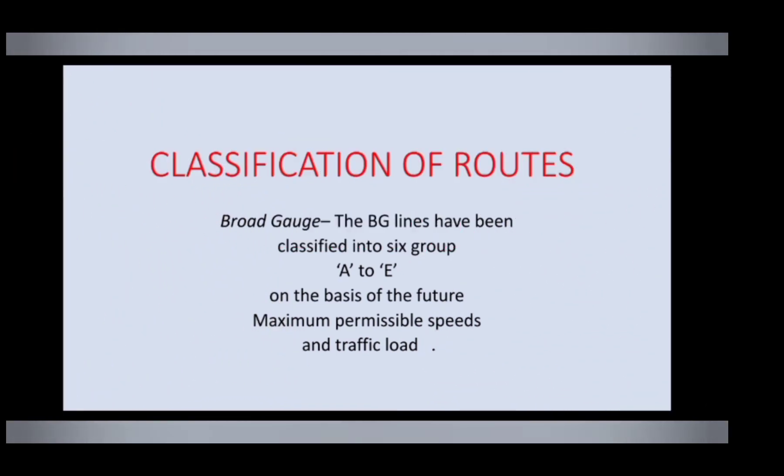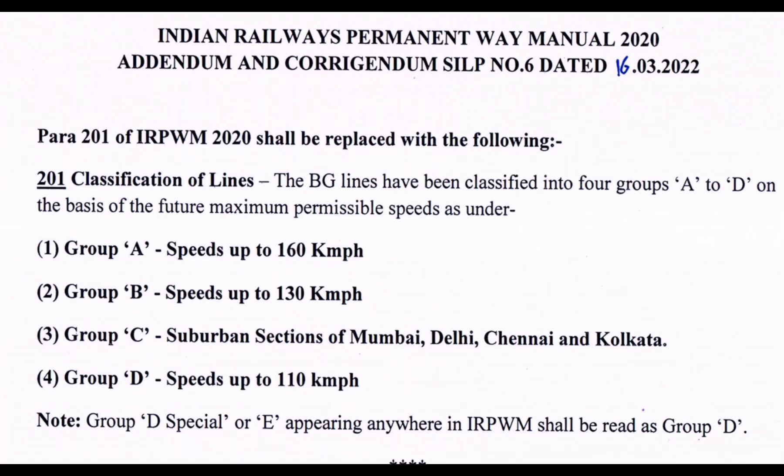As per IRPWM June 2020, BG lines had been classified into six groups A to E. But now, with the correction slips, BG lines have been classified into four groups, A to D only, based on future maximum permissible speeds.